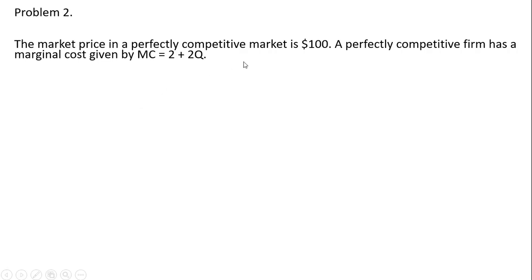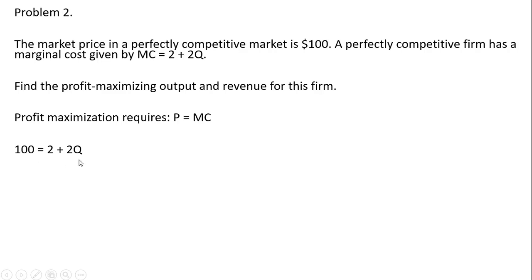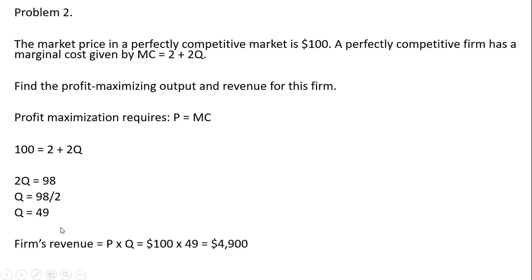Problem two. The market price in a perfectly competitive market is $100. A perfectly competitive firm has a marginal cost given by MC equals 2 plus 2Q — a slightly different marginal cost structure. We set price equal to marginal cost and solve for Q: subtracting 2 from both sides gives 98, then dividing by 2 gives a profit maximizing output of 49 units. The firm's revenue is price times quantity: 100 times 49 gives total revenue of $4,900.